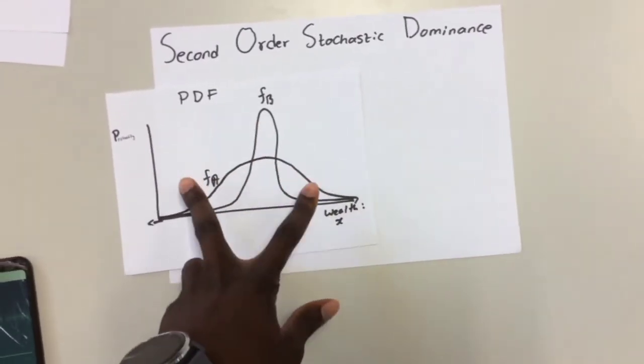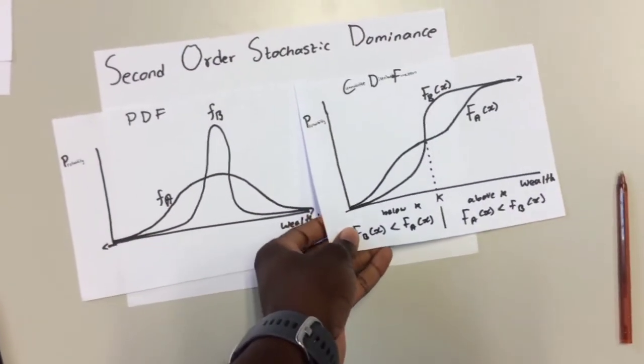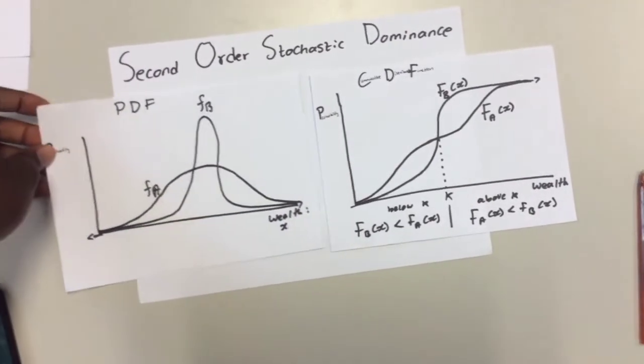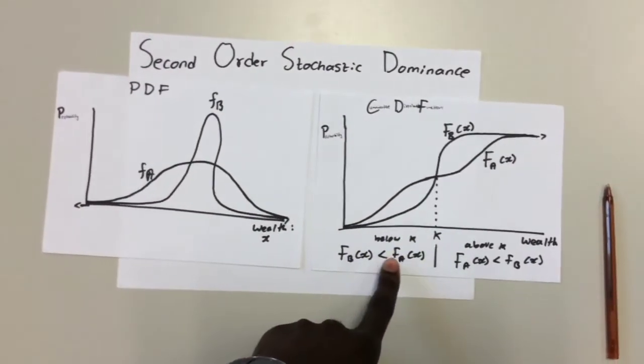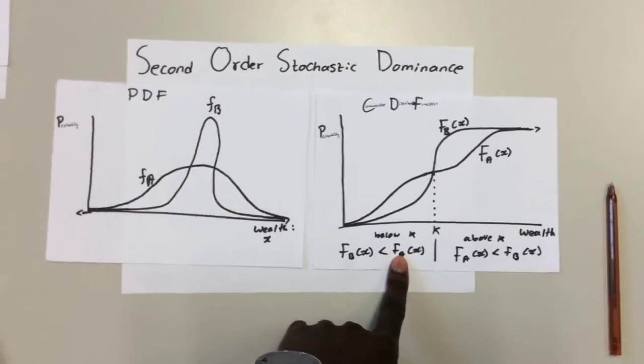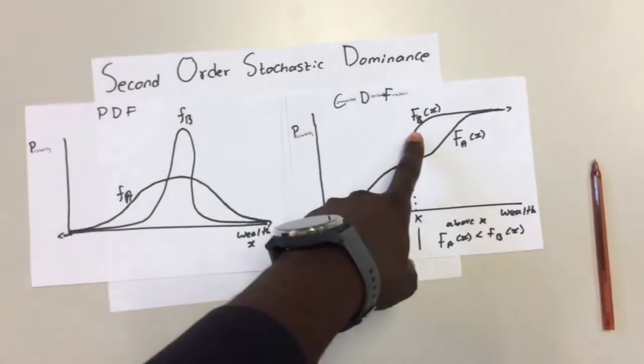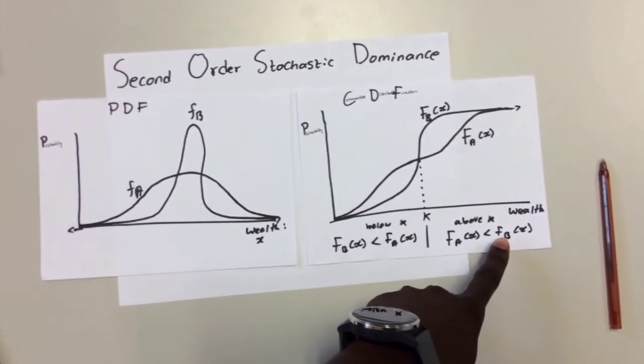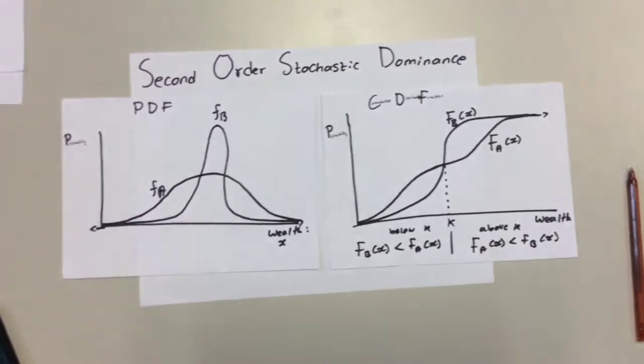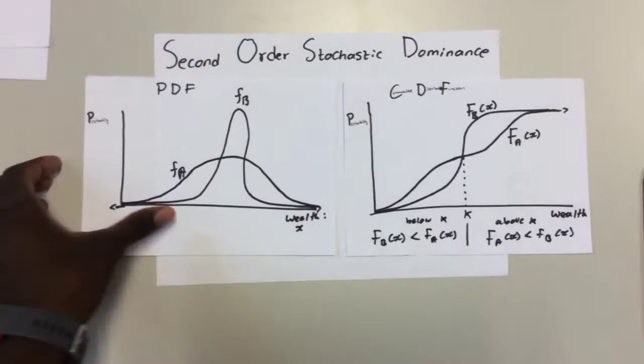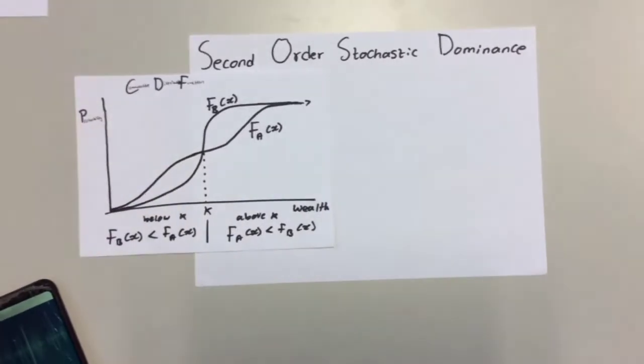When we draw the CDF or the cumulative distribution function, clearly at some point the CDF of B is less than that one of A below k, as you can see. And then above k, the CDF of A is less than that of B. Now what do you do? That is when you introduce a new stochastic dominance which is called the second order stochastic dominance.